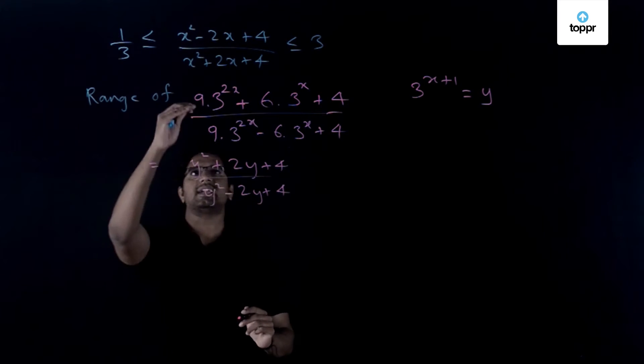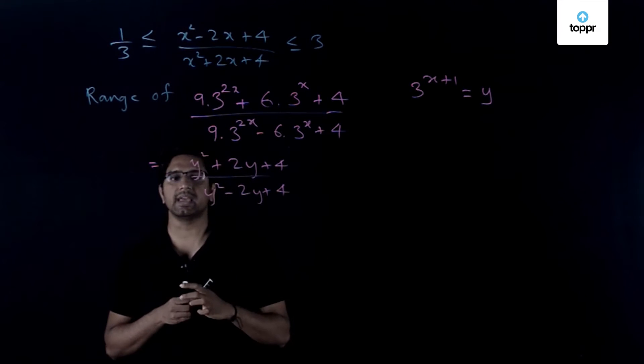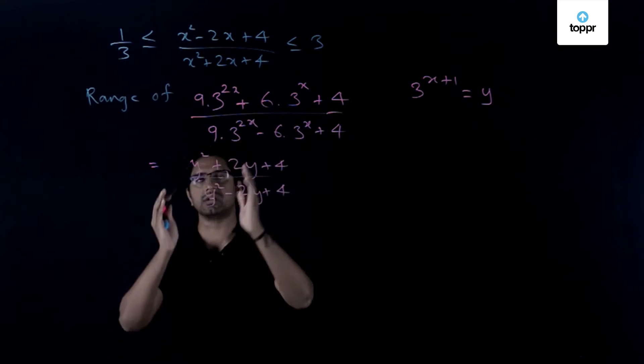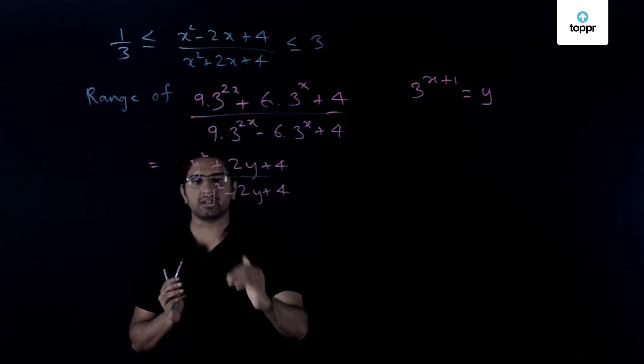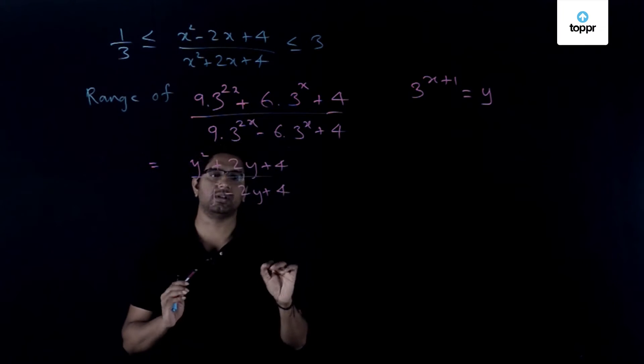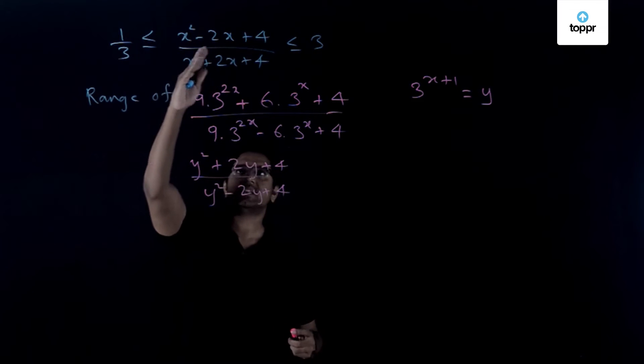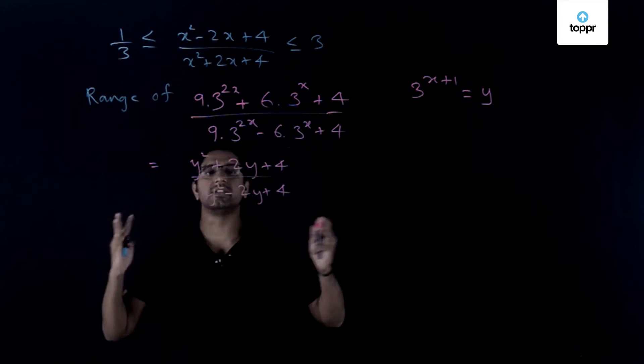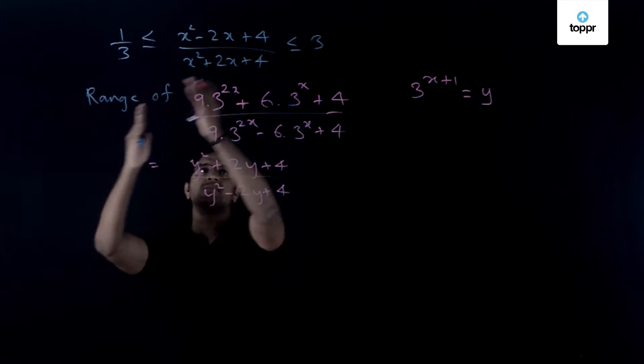Now this is exactly, in fact this is nothing but the reciprocal of this rational function and hence one may be misled to immediately conclude that the range of this function is also 1/3 and 3. But the mistake which one makes in such cases is something which is subtle and something where you have to be very careful is that here when you were calculating the range of this function, the only thing which actually mattered is that x should be any real number. X was allowed to take any real value and therefore you got values between 1/3 and 3.